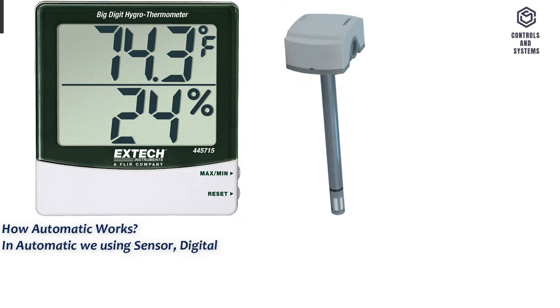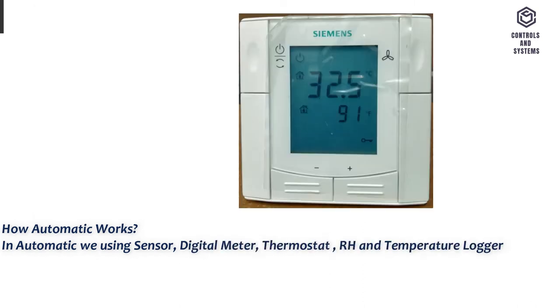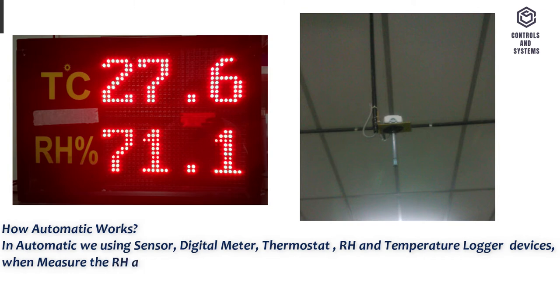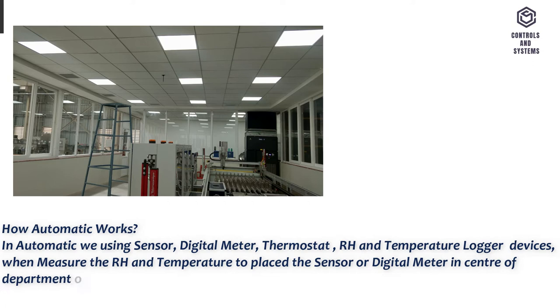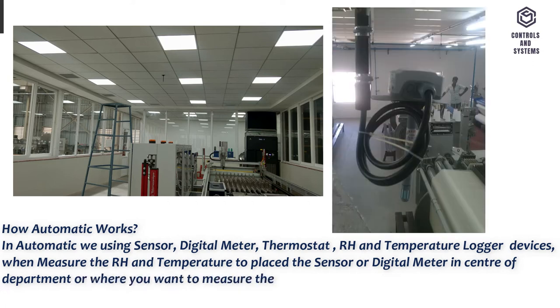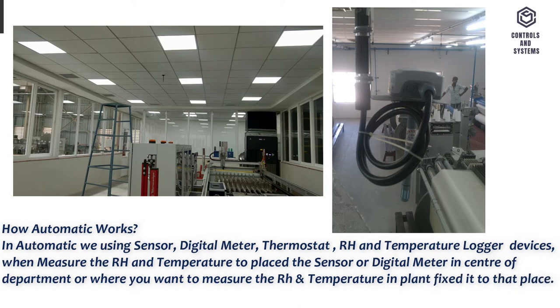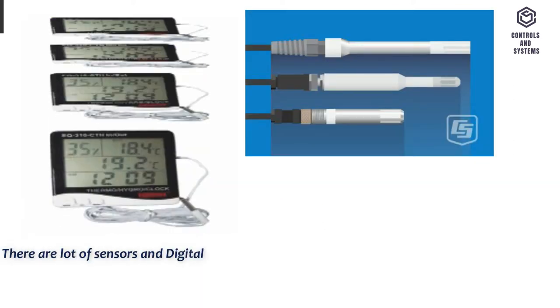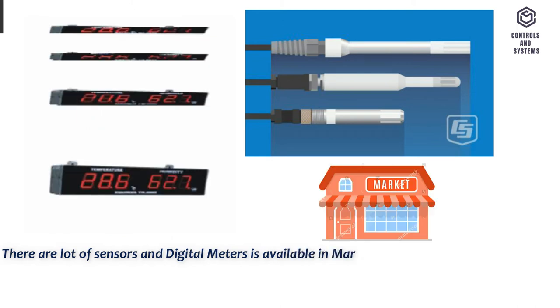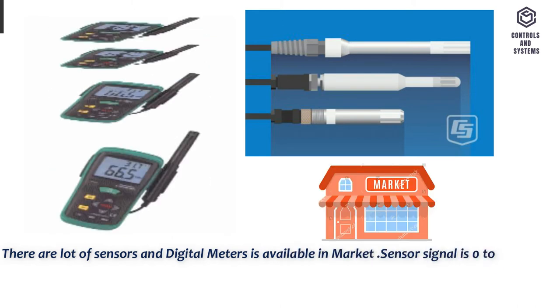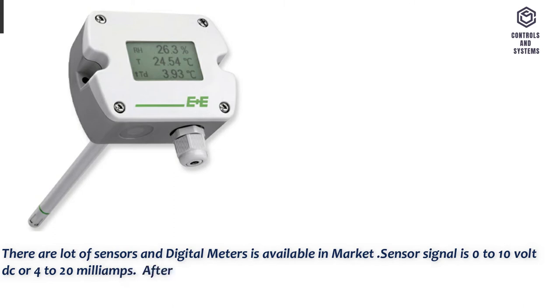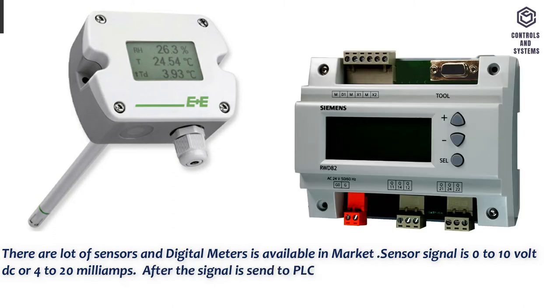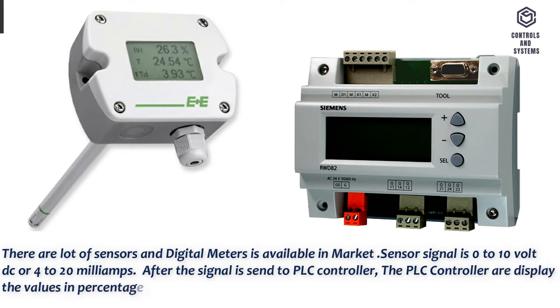In automatic we use sensor, digital meter, thermostat, RH and temperature logger devices. When measuring the RH and temperature, place the sensor or digital meter in center of department or where you want to measure, and fix it to that place. There are lot of sensors and digital meters available in market. Sensor signal is 0 to 10 volt DC or 4 to 20 milliamps. After the signal is sent to PLC controller, the PLC controller displays the values in percentage.